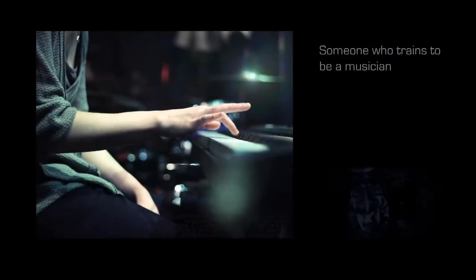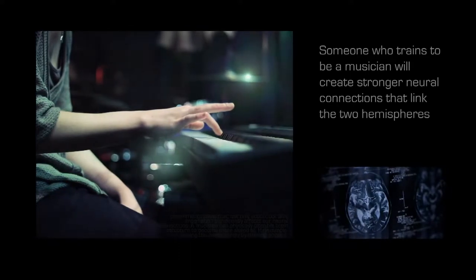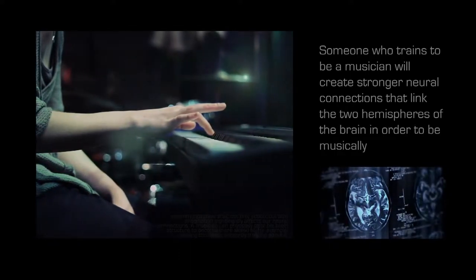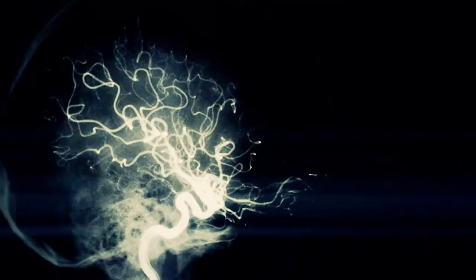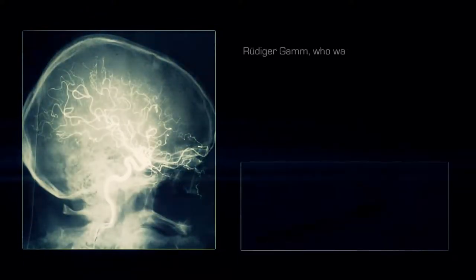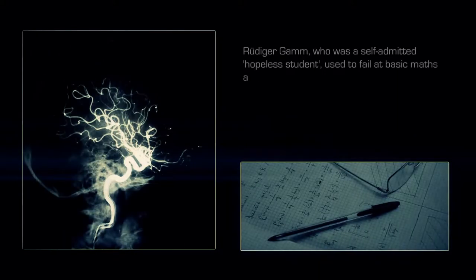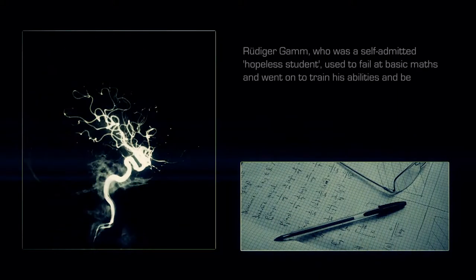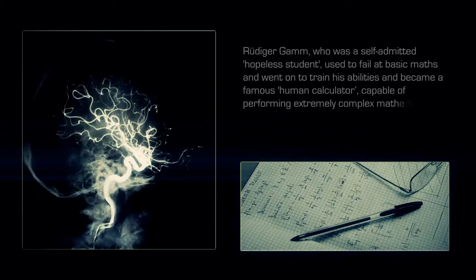Someone who trains to be a musician will create stronger neural connections that link the two hemispheres of the brain in order to be musically creative. Virtually any sort of talent or skill can be created through training. Rüdiger Gamm, who was a self-admitted hopeless student, used to fail at basic math and went on to train his abilities and became a famous human calculator, capable of performing extremely complex mathematics.